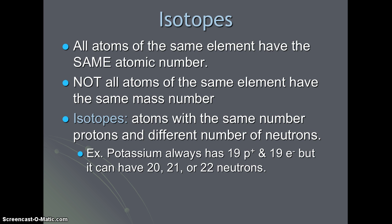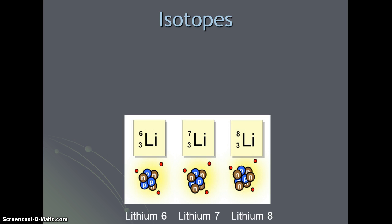For example, a potassium atom always has 19 protons and 19 electrons, but it can have either 20, 21, or 22 neutrons.